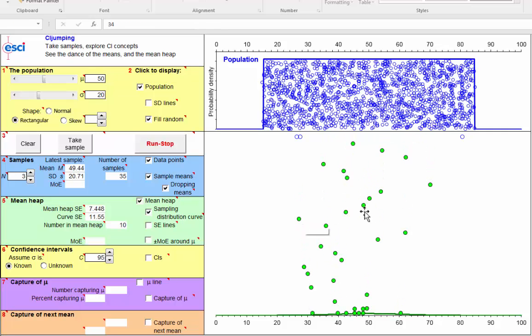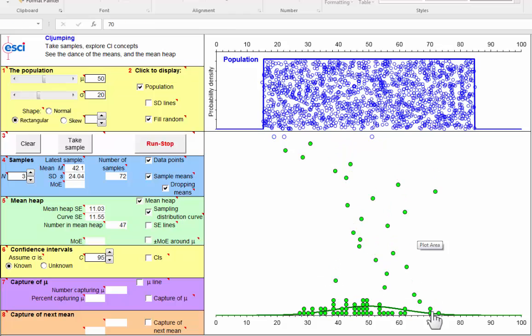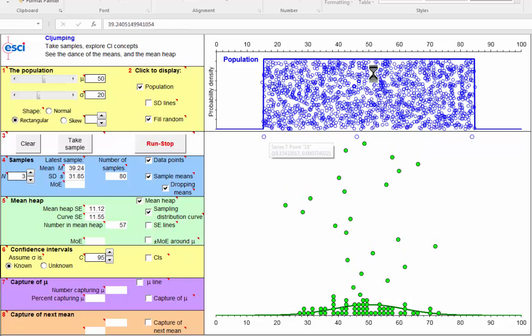Of course, with such small samples, the dance of the means is extremely frenetic, extremely wide. And we'd expect the sampling distribution of these means to be correspondingly very wide, a large standard error when you have very small samples. But what will the shape of this sampling distribution be, given that we don't have a normally distributed population.